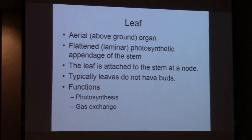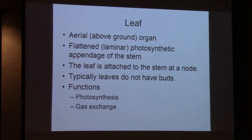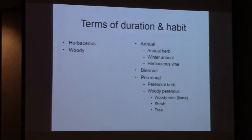Leaves are aerial, above-ground organs. They're flattened - laminar, technically - lateral appendages of the stem. The leaf is attached to the stem at the node. Leaves typically do not have buds, with some exceptions like Kalanchoe. The function of the leaf is photosynthesis and gas exchange. You've got to be able to distinguish between and among the different organs - you've got to be able to do that consistently and reliably to identify plants. That's a very important first step.